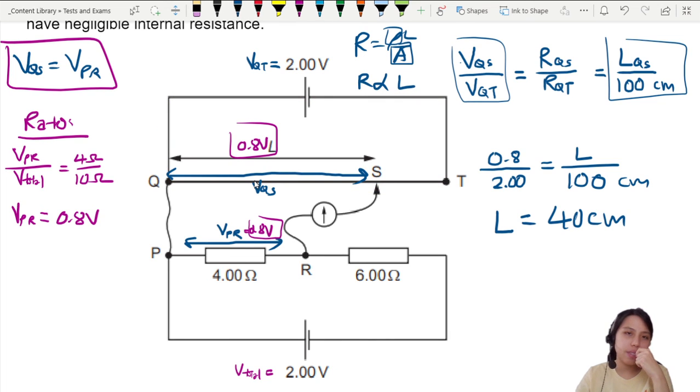If the potential difference is balanced, this is what it means. There will be no current flowing through this galvanometer. No potential difference. You put voltmeter, 0. Ammeter, 0. Galvanometer, 0. Because the potential is the same.